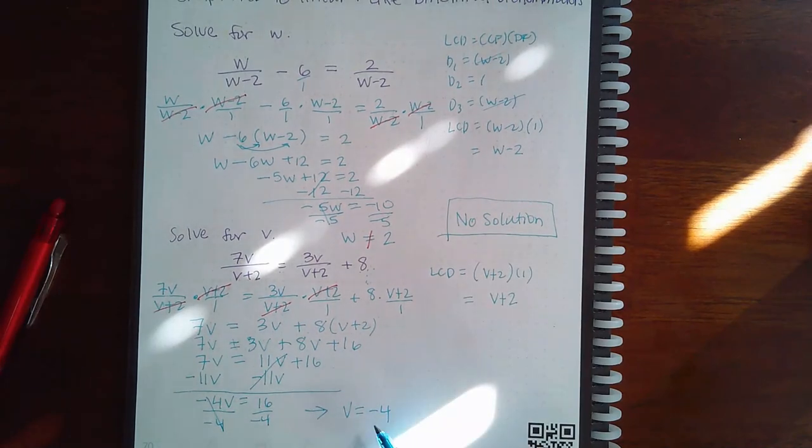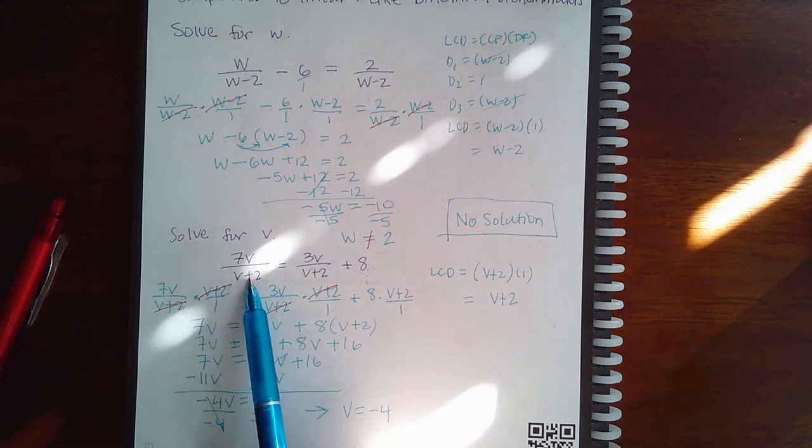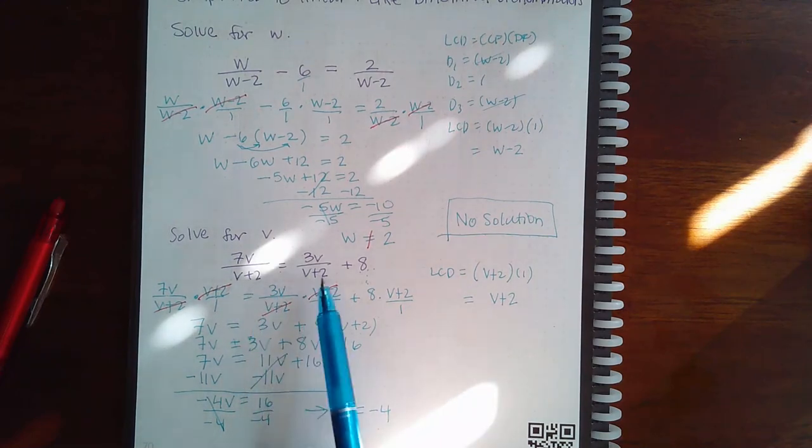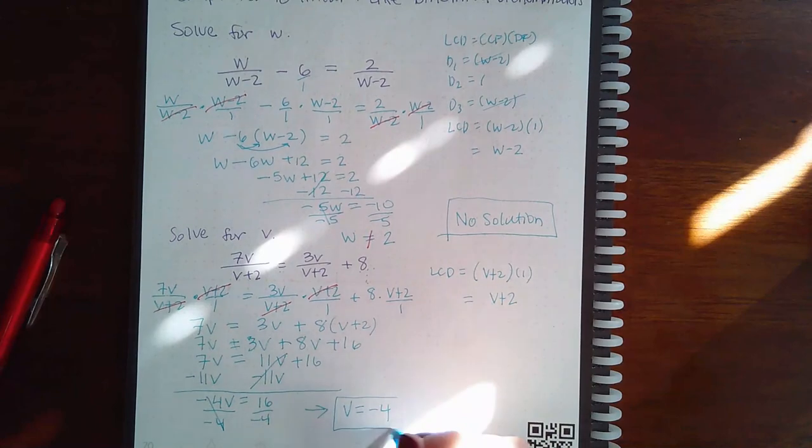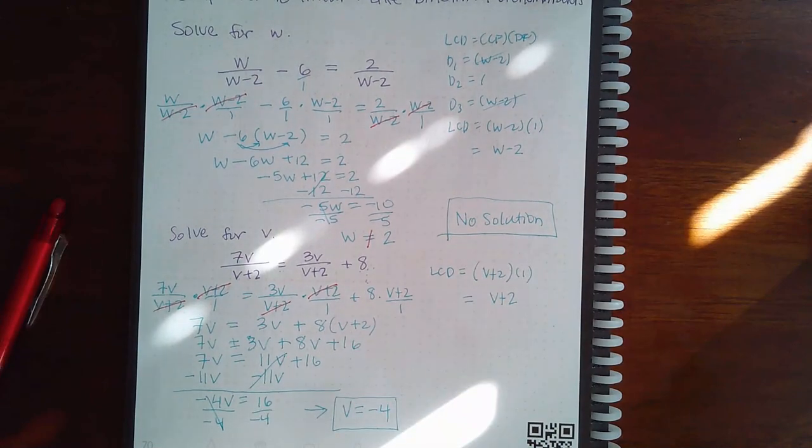So make sure that this doesn't make any of your denominator 0. If negative 4 plus 2 is not 0, again, negative 4 plus 2 is not 0. And this denominator is not 0. So this potential solution becomes the actual solution.